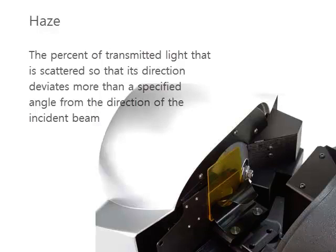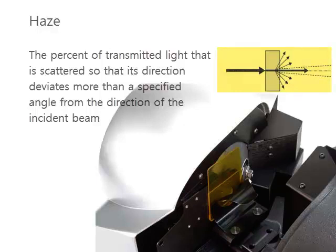In the transmission of light, haze is the percent of transmitted light that is scattered so that its direction deviates more than a specified angle from the direction of the incident beam.